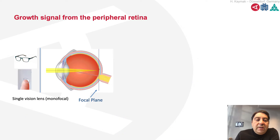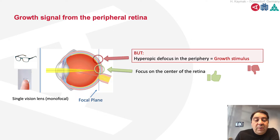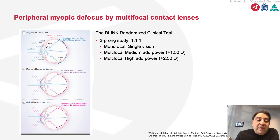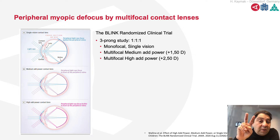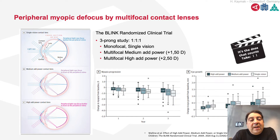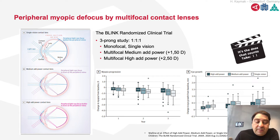When looking at optical options, we know that single-vision lenses produce focus on the center of the retina with a hyperopic focus in the periphery, which is a growth stimulus for the eye. The solution is the induction of myopic focus in the periphery. With multifocal contact lenses, the concentration — meaning the add-power — matters: higher add-power produces better results in myopia stopping or reducing.